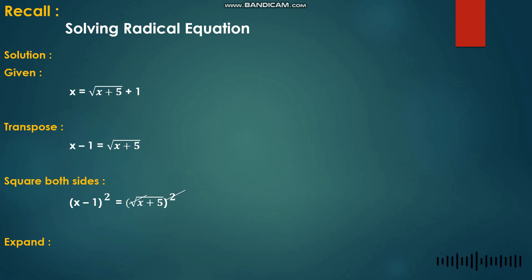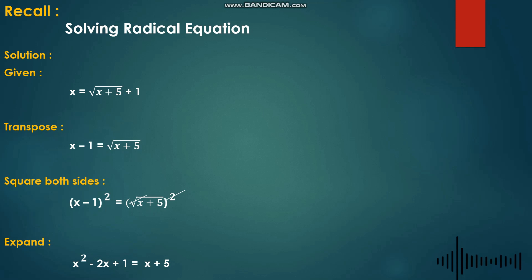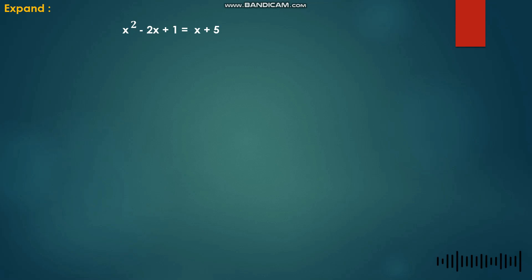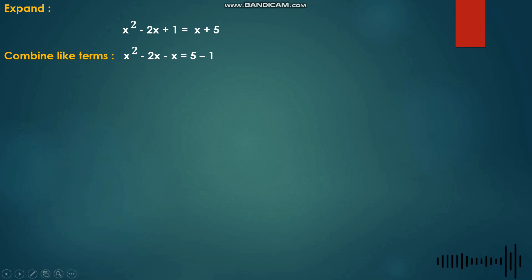Since we have (x−1)² on the left side, we need to expand it. Using the FOIL method or multiplying by itself: (x−1)(x−1) = x² − 2x + 1. So we have x² − 2x + 1 = x + 5. Combining like terms: transpose positive 1 to the right side and x to the left side, giving x² − 2x − x = 5 − 1, which simplifies to x² − 3x = 4.